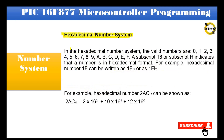Hexadecimal number system: In the hexadecimal number system, the valid numbers are 0, 1, 2, 3, 4, 5, 6, 7, 8, 9, A, B, C, D, E, F. A subscript 16 or subscript H indicates that a number is in hexadecimal format.